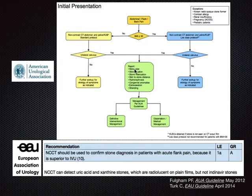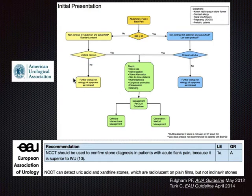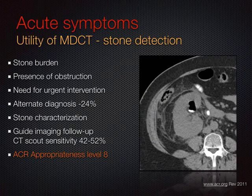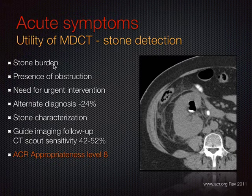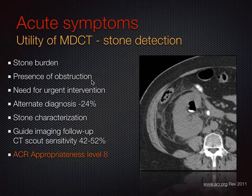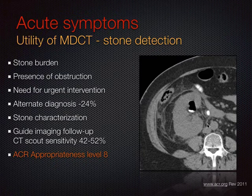If a stone is visualized and characterized both in terms of size and location, there are a variety of other parameters which radiologists can easily report that may alter management. If no calculus is found, the scan is reviewed for an alternate diagnosis, which is present in up to 24% of patients. CT has a number of advantages: it rapidly assesses stone extent and burden, evaluates obstruction with over 95% positive and negative predictive value, and can assist in detection of needs for urgent intervention—as exemplified in this patient with an obstructing proximal ureteric stone and emphysematous pyelitis in a septic patient.